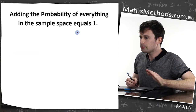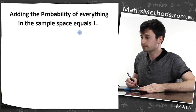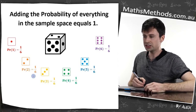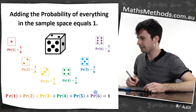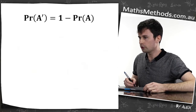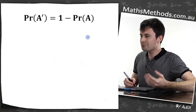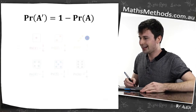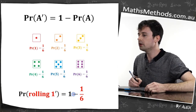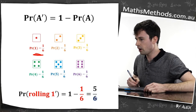Some rules you should know. Adding the probability of everything in the sample space equals one — if I want to know the probability of getting any one of these, I just add them all together and that gives me one. The probability of not A equals one minus the probability of A. For example, the probability of rolling not a one would be one minus the probability of rolling a one, which gives us five over six.